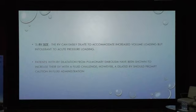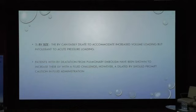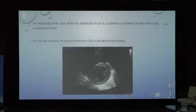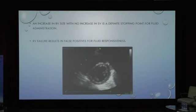The right ventricular size can easily dilate and accommodate volume but is intolerant to pressure loading. A dilated RV — as with pulmonary embolism or cardiogenic shock — should prompt caution in fluid administration. An increase in RV size without a corresponding increase in stroke volume is a definitive stopping point for fluid administration, because RV dilatation causes a pressure shift to the left side, reducing LV performance. RV failure can also present as false positives for fluid responsiveness.